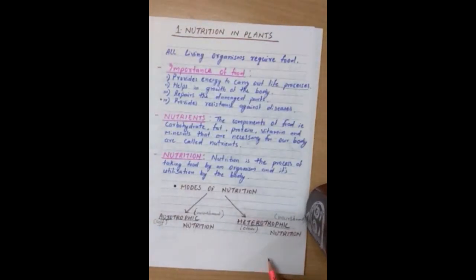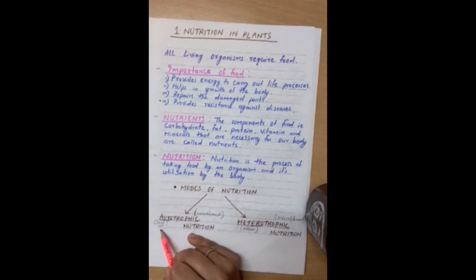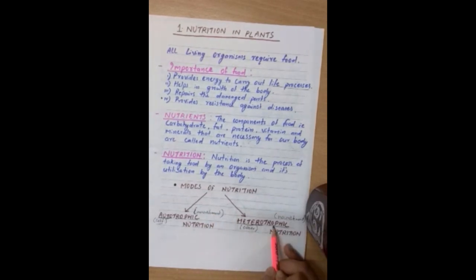Now, coming to the types of nutrition or modes of nutrition which are of two types: Autotrophic nutrition and heterotrophic nutrition. Auto means self. Trophic means nourishment. Hetero means other. Trophic means nourishment.